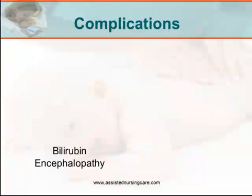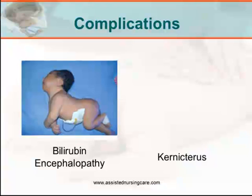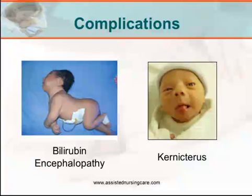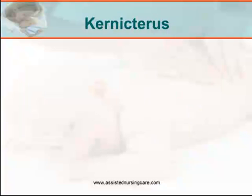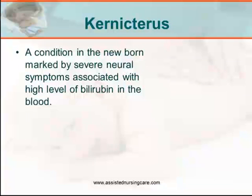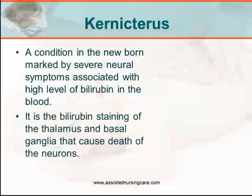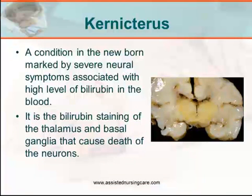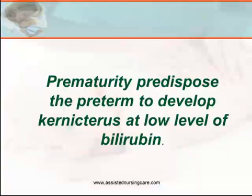What are the complications of hyperbilirubinemia? These are bilirubin encephalopathy and kernicterus, as shown in the pictures. Kernicterus is a condition in the newborn marked by severe neural symptoms associated with high levels of bilirubin in the blood. It involves bilirubin staining of the thalamus and basal ganglia, causing death of neurons or brain cells. Remember that prematurity predisposes the preterm infant to develop kernicterus at low levels of bilirubin.